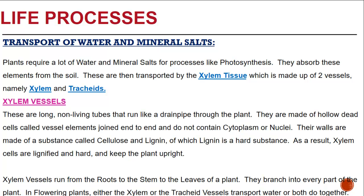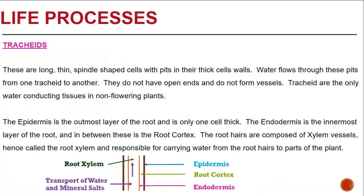In flowering plants, either the xylem or the tracheid vessels transport water, or both do it together. The tracheids are long thin spindle-shaped cells with pits in their thick cell walls. Water flows through these pits from one tracheid to another. They do not have open ends and do not form vessels. Tracheids are the only water-conducting tissues in non-flowering plants.